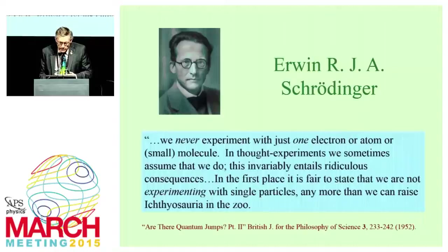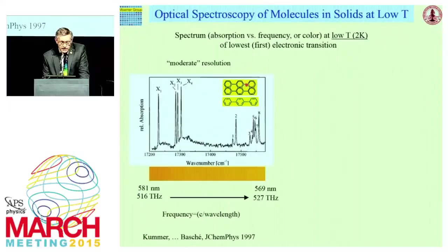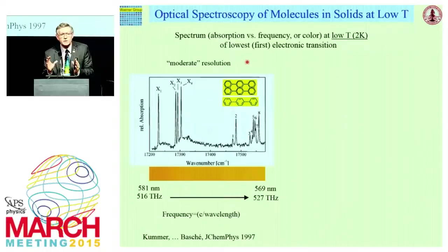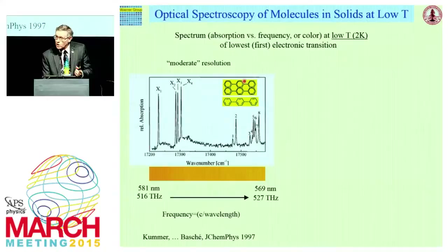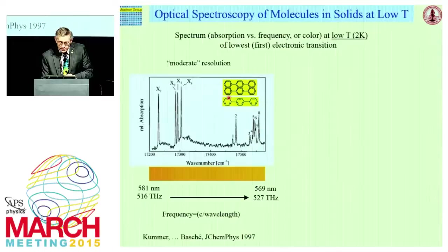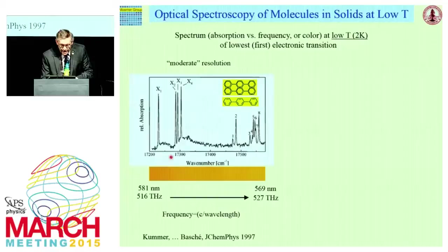That takes us back to spectroscopy and putting molecules in solids. Imagine you take a molecule like terrylene and put it in a transparent host of peritrophenyl. If you measure it at room temperature, you'd see a fairly broad absorption line, 50 nanometers in width. But if you cool that sample to low temperatures — a few degrees Kelvin — where all phonons and vibrations are turned off, and you pick a molecule with a strong zero phonon electronic transition, then the lowest transition becomes extremely narrow. You can see there are actually four sites, four different inequivalent locations for the terrylene in the host crystal.